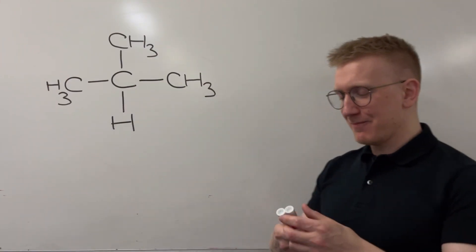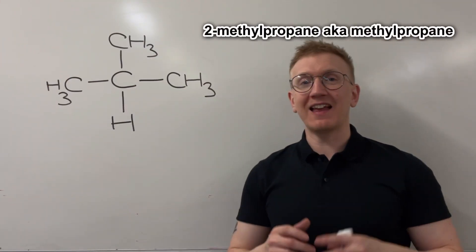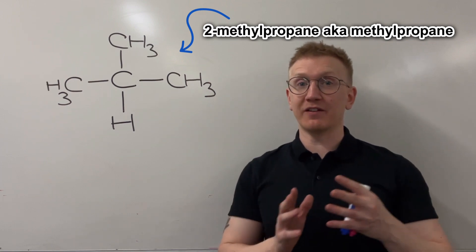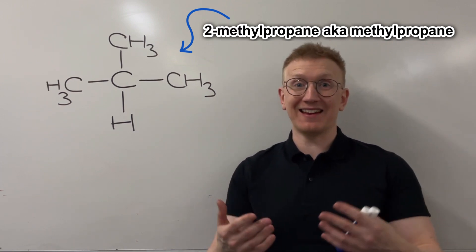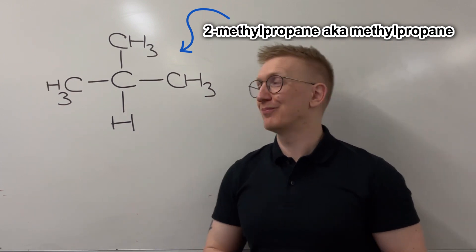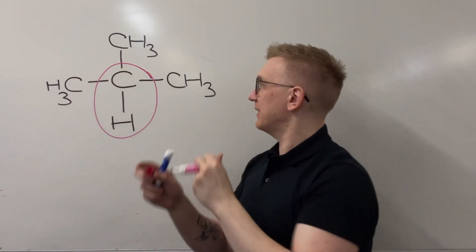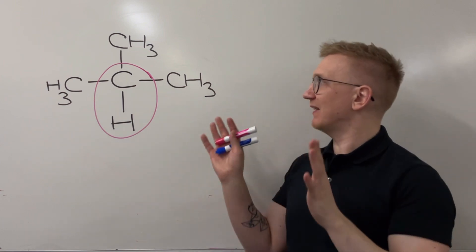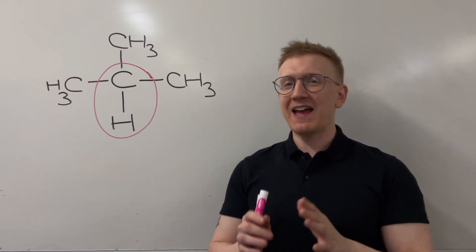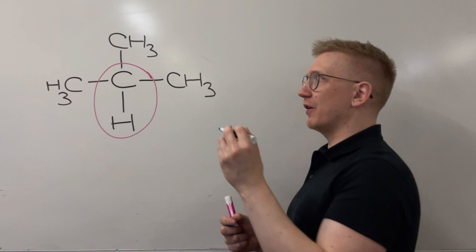So here I've got the methylpropane and what I need to decide first is how many different hydrogen environments do I have, because that's going to be how many peaks I get on the hydrogen NMR spectrum. I'm definitely going to get one peak for this just here, that is a completely separate hydrogen environment from anything else on the molecule.